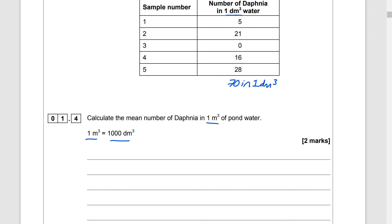So if I've got 70 in one decimetre cubed of water I'm going to times that by a thousand to give me my total in a metre cubed and then I need to divide that by five because there are five samples and they've asked for the mean and that gives an answer of 14,000.